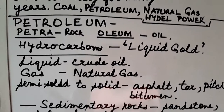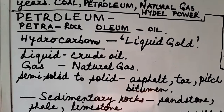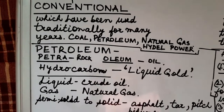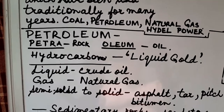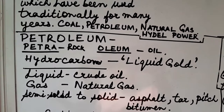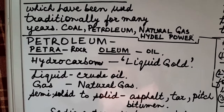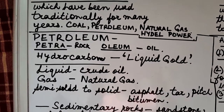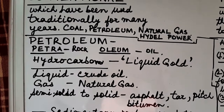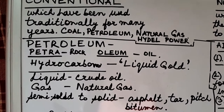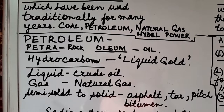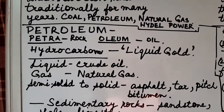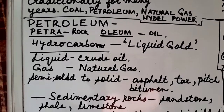Petroleum is called liquid gold because it is very useful — not even the tiniest drop is wasted; every part is put into use. Coal is also called black gold because of its high utility as a source of energy. Most of the electricity produced in our country comes from coal. Electricity is produced using coal and petroleum in thermal power stations, and in India we mainly have thermal power stations working on coal.